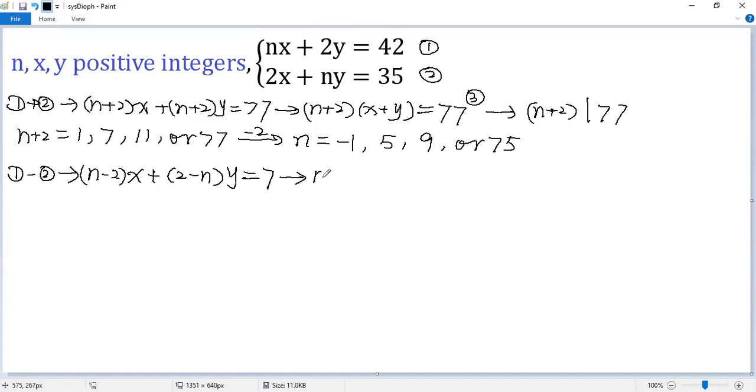Take the common factor n minus 2 out. So we get x for the second time. We get negative here. So negative y equals 7. We denote it as 4.